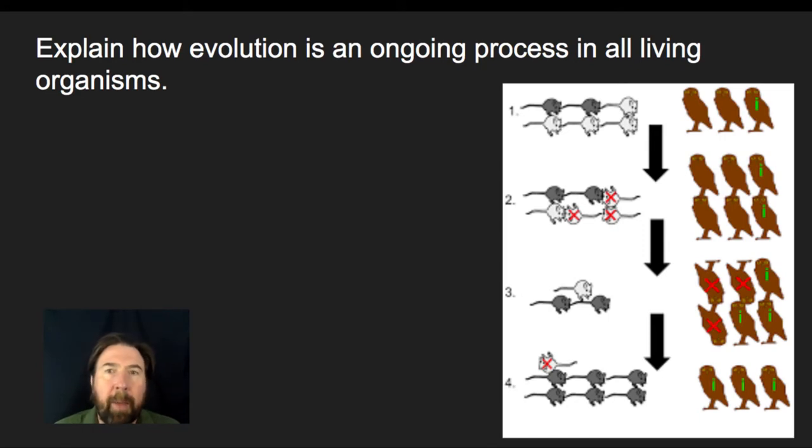Alright, so one of the things to talk about in terms of evolution is, I'm going to explain how evolution is an ongoing process that all living organisms are undergoing. So if species or populations, and really when we think about evolution, we look at it from a population basis, when we look at a population, the question is, is that population staying exactly the same over time, or are there going to be shifts within that population?